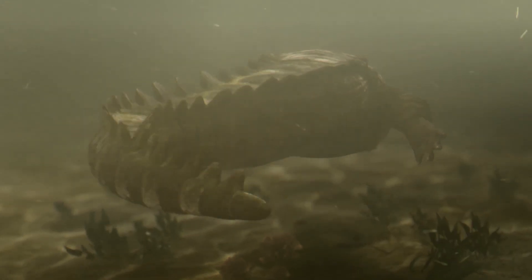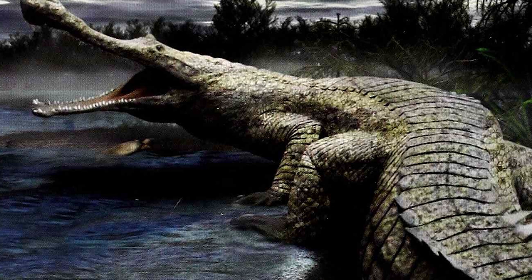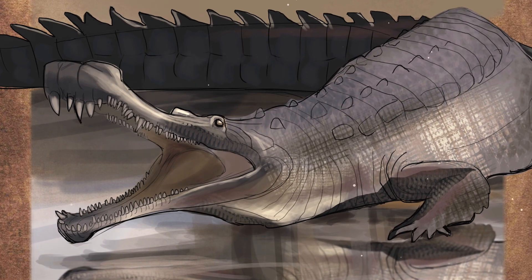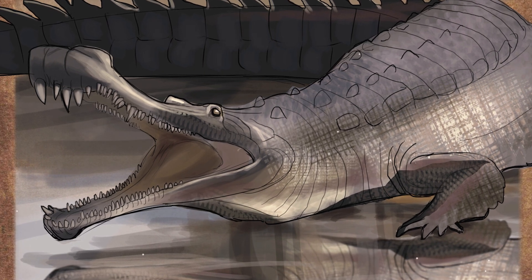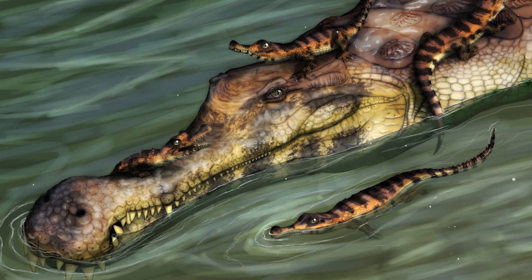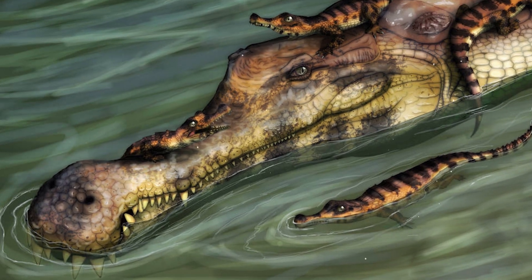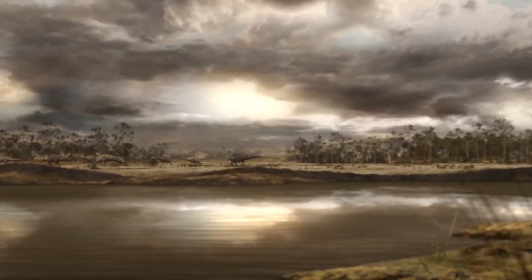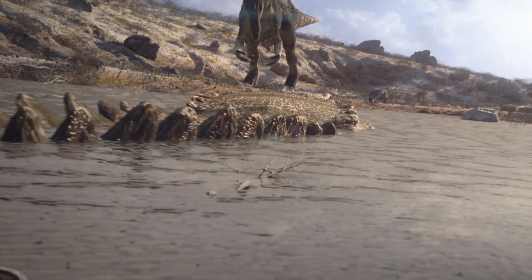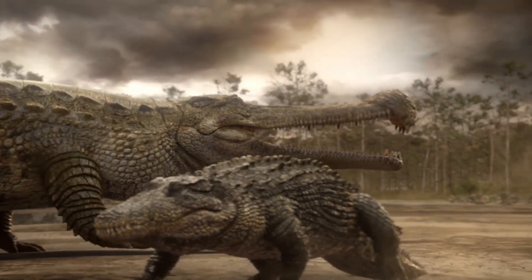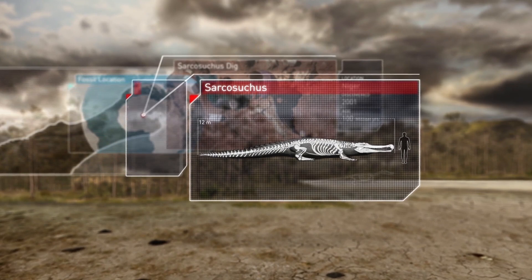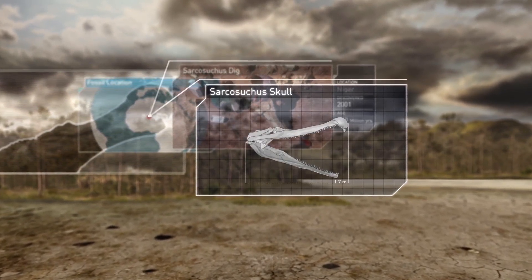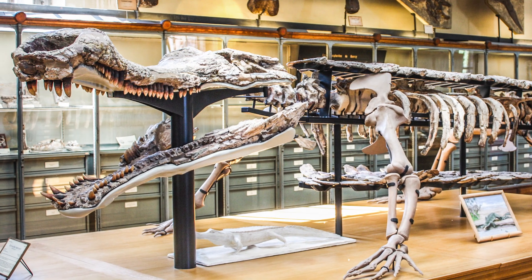Sarcosuchus, also known as the Super Crocodile, was one of the largest Crocodilomorphs to exist on Earth. This prehistoric giant lived about 110 million years ago during the Cretaceous period and reached impressive sizes surpassing most modern crocodiles. It appeared approximately 130 million years ago and lived in regions that are now the territory of the Sahara — at that time covered with vast rivers and swamps, creating ideal conditions for large aquatic predators. Adults could reach lengths of up to 39 feet and weigh about 8 tons. Its skull reached almost 2 meters in length, and its jaws were equipped with sharp teeth that could bite through even the thick skin of dinosaurs.